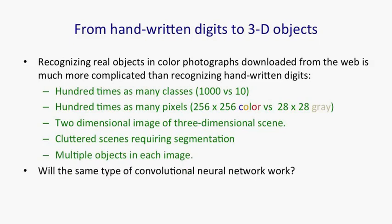So the question is: will the same kind of convolutional neural network that proved so good at recognising handwritten digits work for real colour images? In the domain of real colour images, we probably do need to wire in some prior knowledge. Because if we try to do it with no knowledge wired in — putting in all knowledge by generating extra training examples — the computational problem is still too large for current computers.